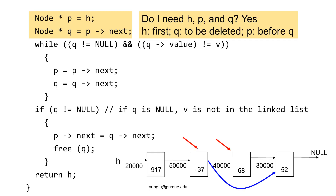The next question is whether we need three pointers — h, p, and q. The answer is yes. We need h as the first node of the linked list; without h, we lose the linked list. We need q as the node to be deleted. We also need p as the node before q so that the link from p can bypass q.